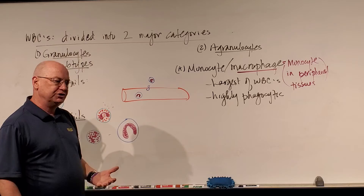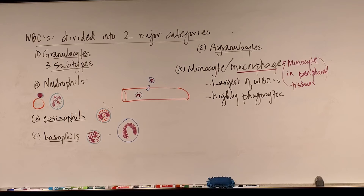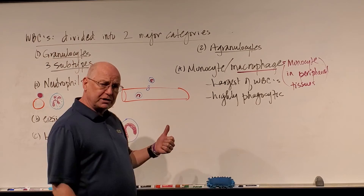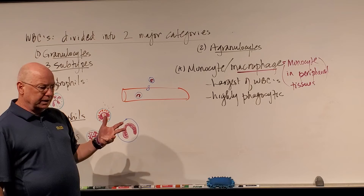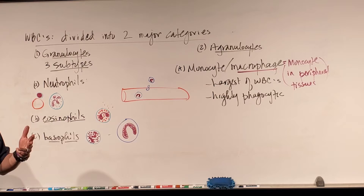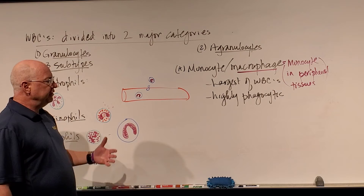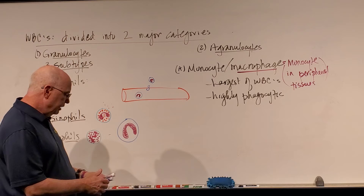It turns out there are a whole bunch of tissue macrophages we learned about in A&P: osteoclasts are a type of macrophage; microglial cells in the nervous system; Kupffer cells in the liver; mesangial cells associated with our kidneys; and some in our lungs. They are very highly phagocytic. A tissue macrophage is just a monocyte that lives in a peripheral tissue.